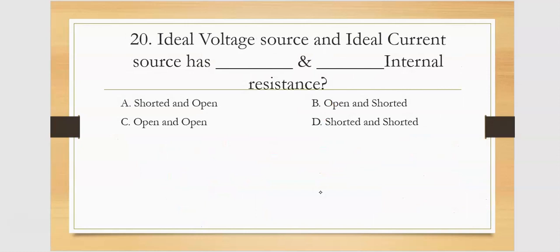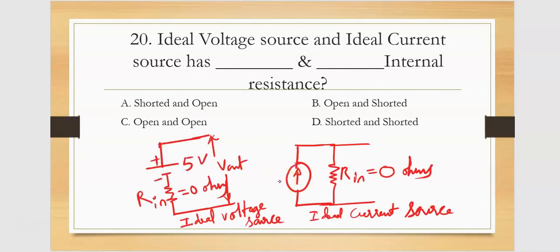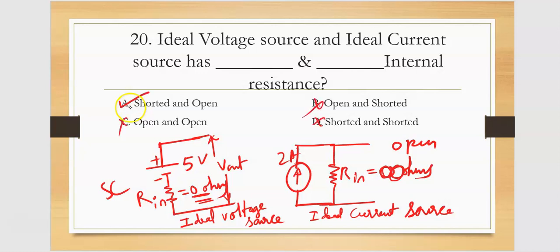The last question: ideal voltage source and ideal current source have what internal resistance? For a voltage source, there is a resistance in series. When it is ideal, the internal resistance is 0 ohms — keep that in mind. Resistance 0 ohms means short circuit. For an ideal current source, the internal resistance is infinity — open circuit. So the voltage source is shorted (0 ohms) and the current source is open (infinite resistance). That is the correct answer.